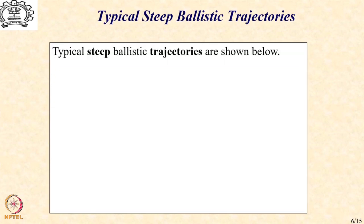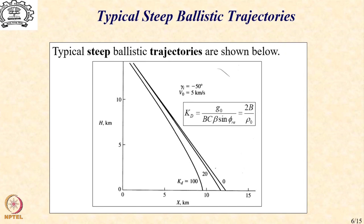Let us now try to visualize these trajectories for different values of angles and the constant kd which is the ratio of 2b divided by rho0 and for an entry angle of minus 50 degree which means that at the time of entry the object makes an angle of minus 50 degree with the local horizon and has a velocity of 5 kilometers per second.